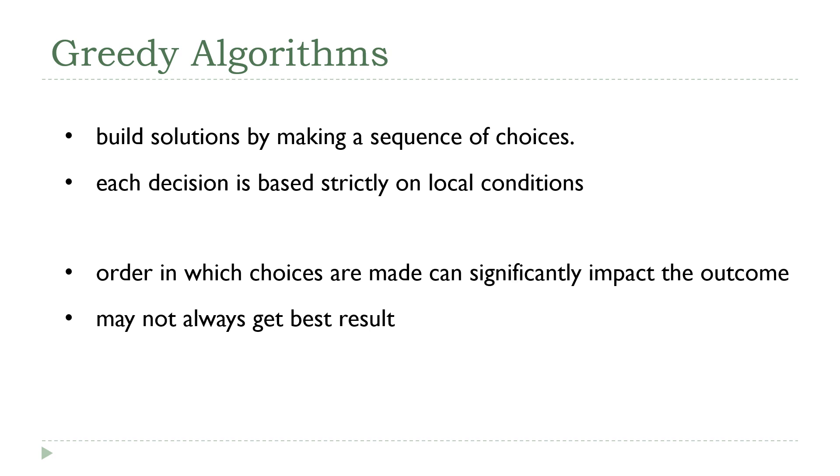And each decision is based strictly on local conditions. So, when I was picking the next vertex, all I looked at was the next vertex relative to the vertex I was currently on. A greedy algorithm has no capacity to look ahead and say, well, I know this is my best choice now, but if I make that choice, it's going to force me into situations down the road where I have to make some really bad choices. That's the sense in which this is greedy. It's very much in the moment. It has no way of looking beyond that.